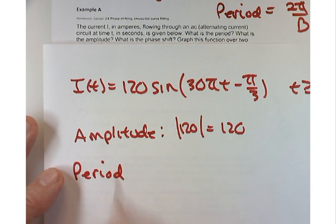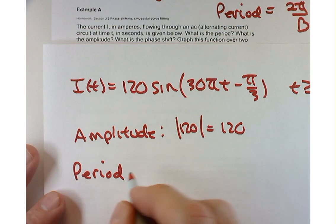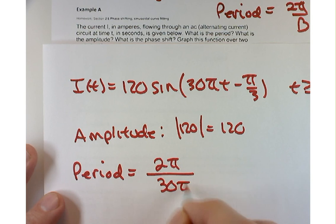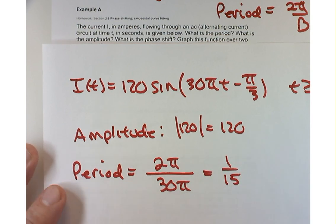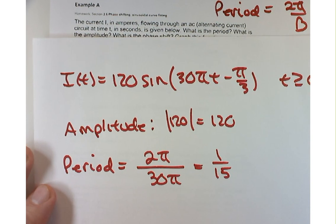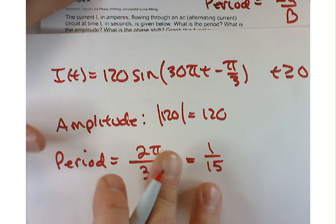How about the period? What am I going to do to find the period? 2 pi over 30. Actually, 2 pi over 30 pi, which simplifies to 1 over 15. Beautiful.